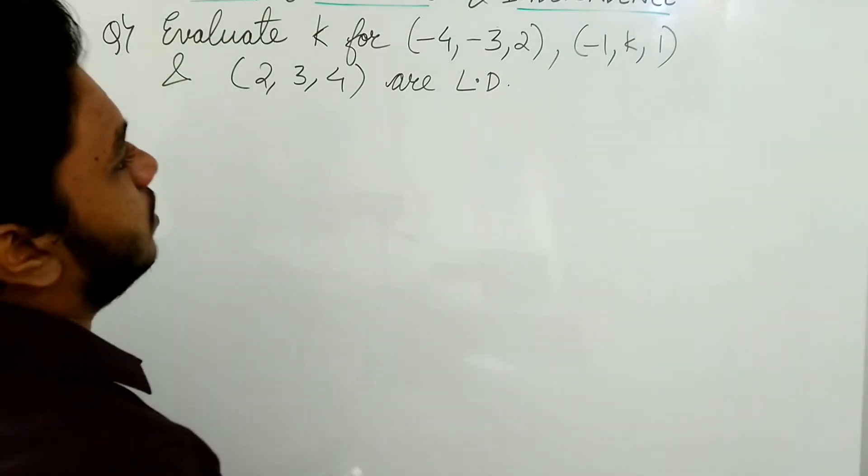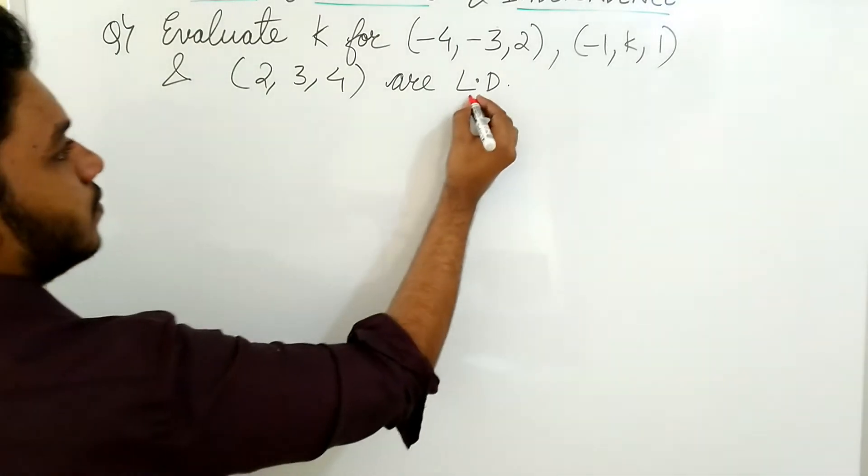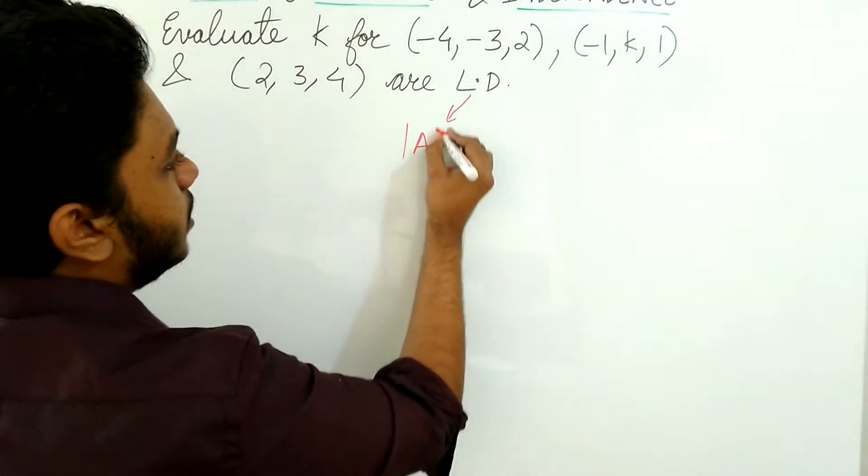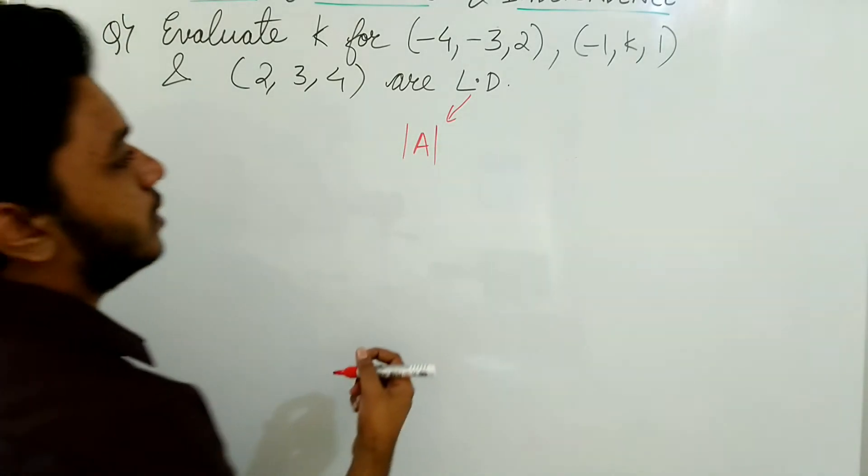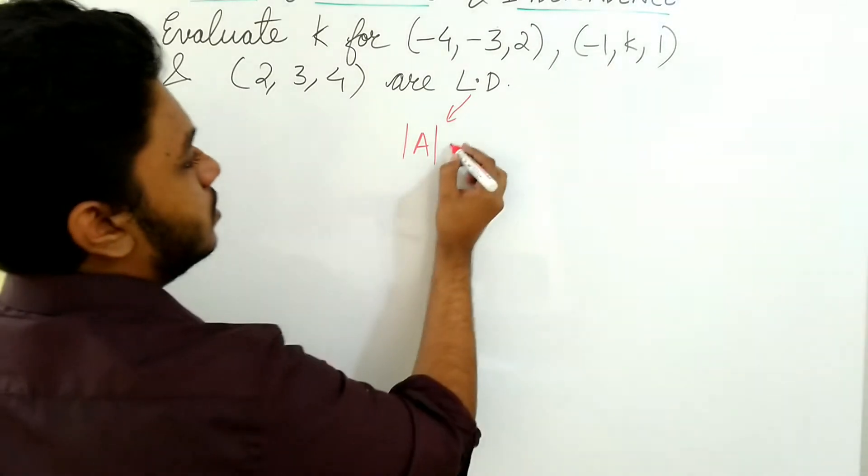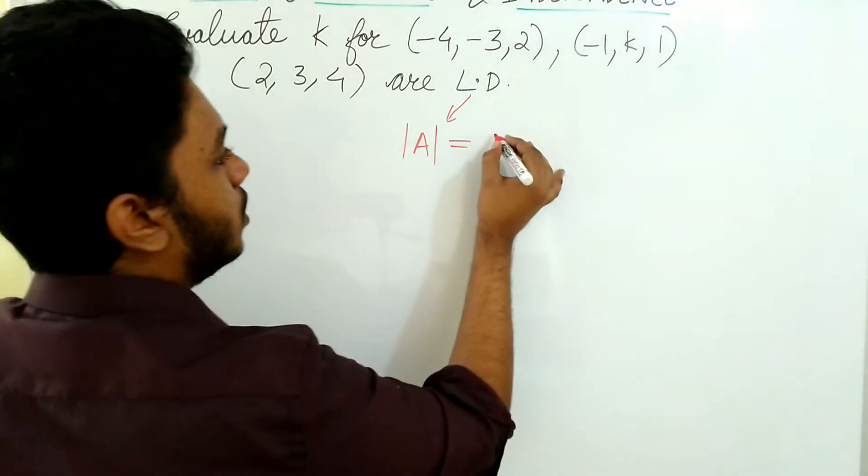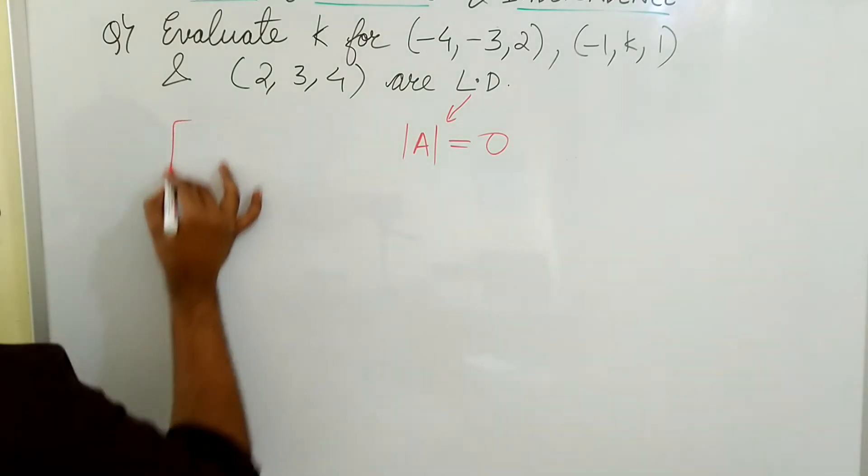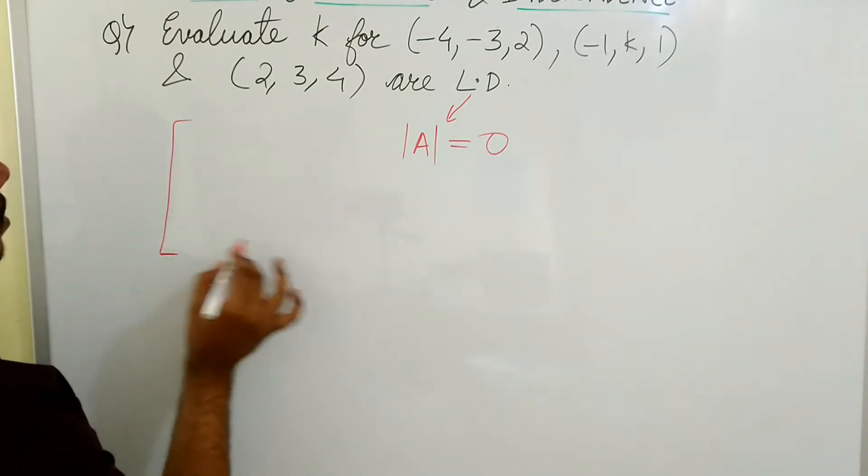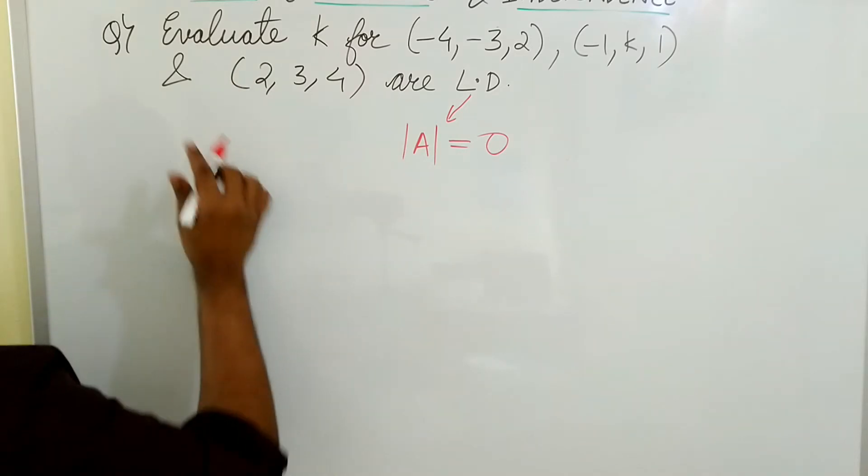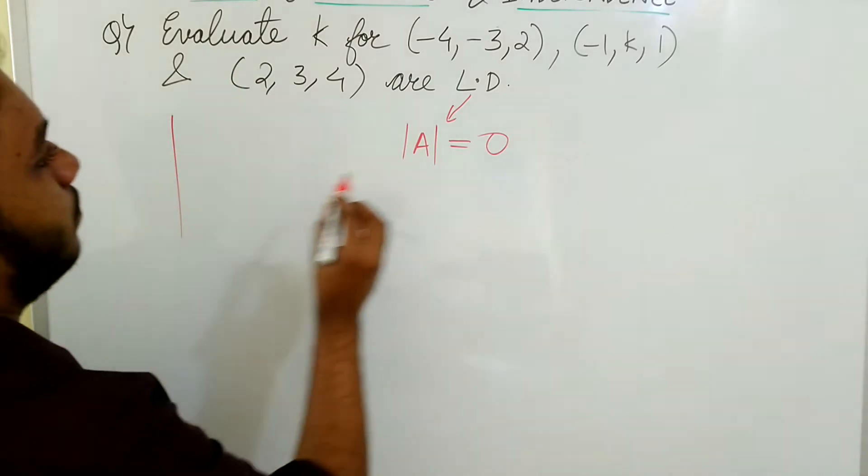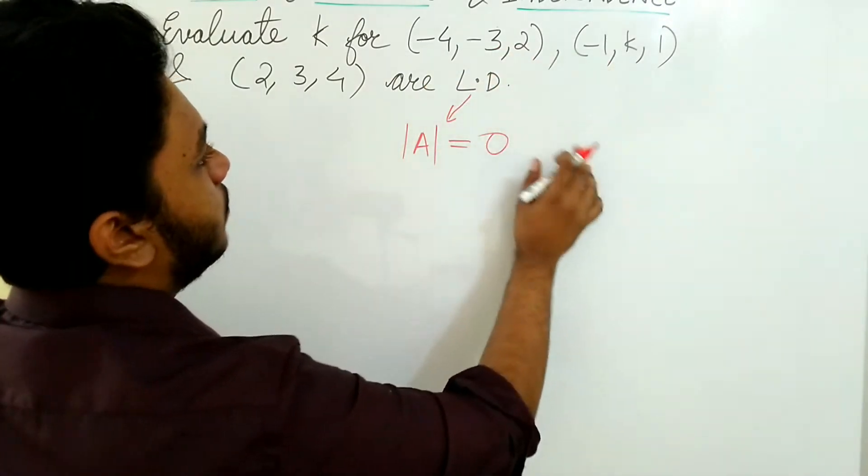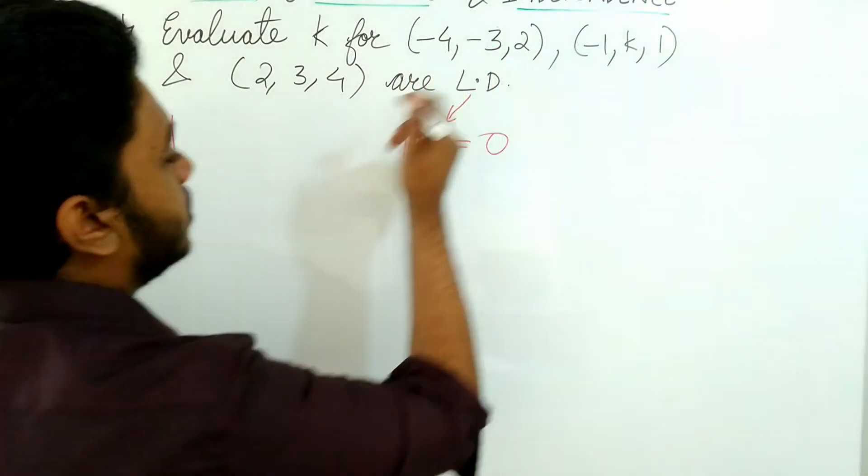How to find the value of k? If it is linearly dependent, we know that determinant A should be equal to 0. So we will form the matrix. How to write the matrix when the vectors are given? We have to write it in column wise.